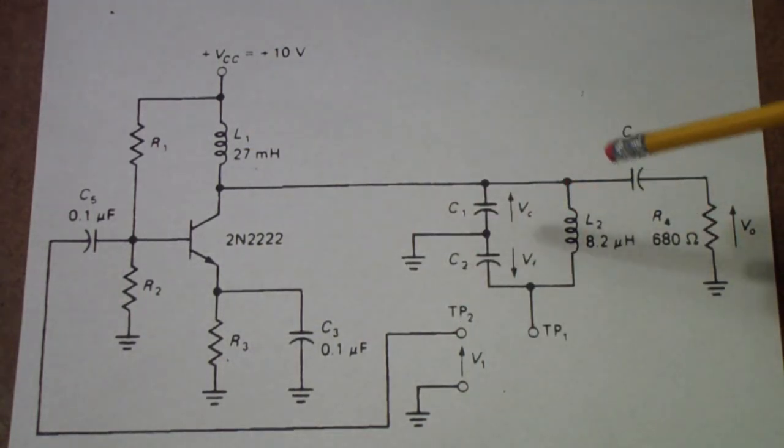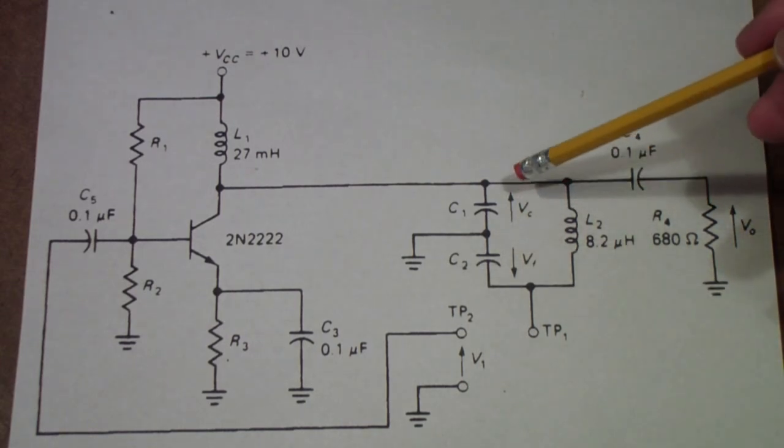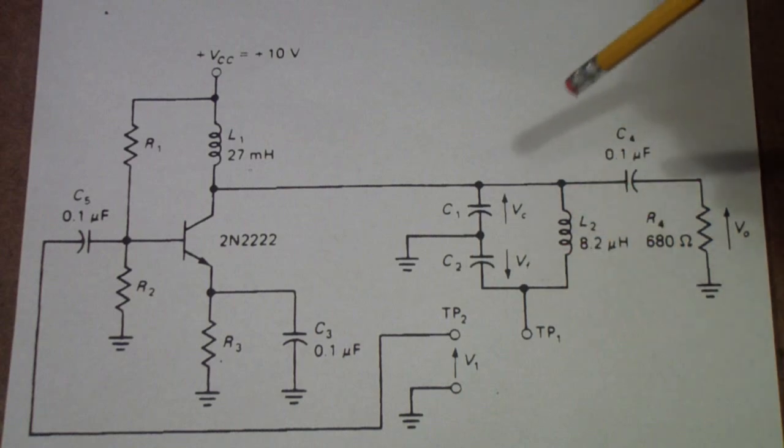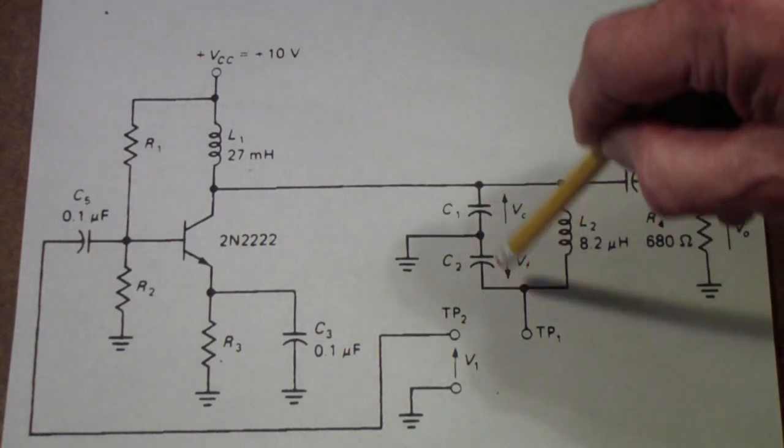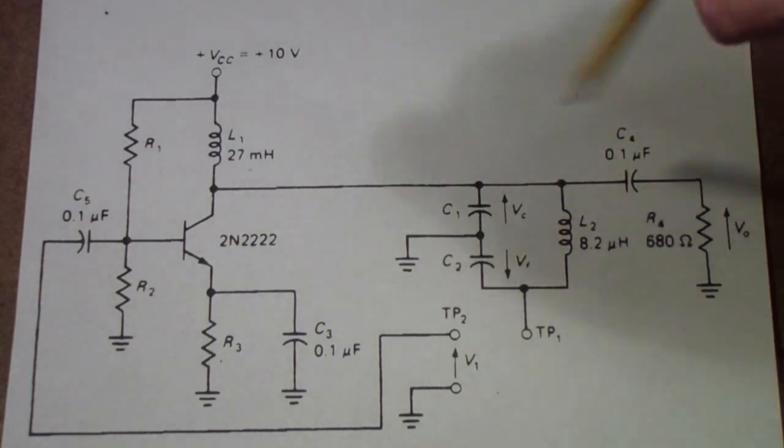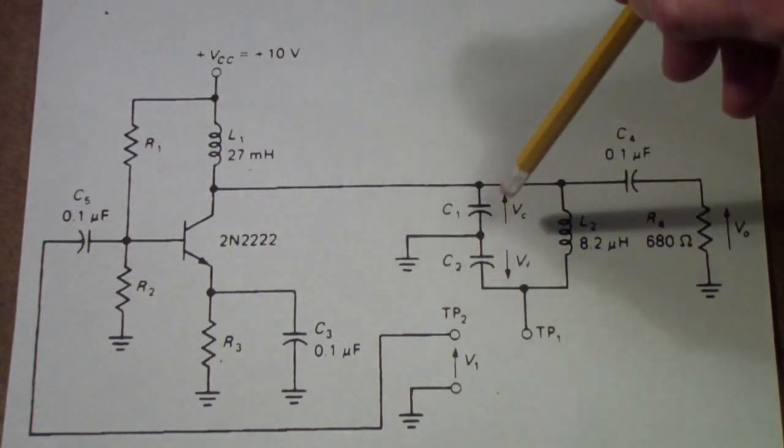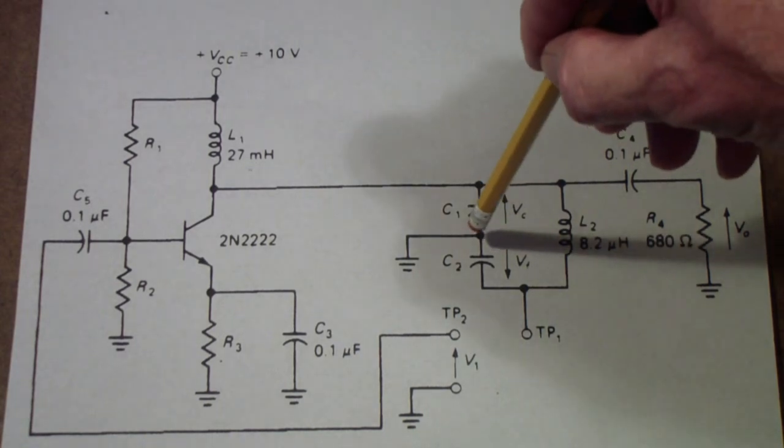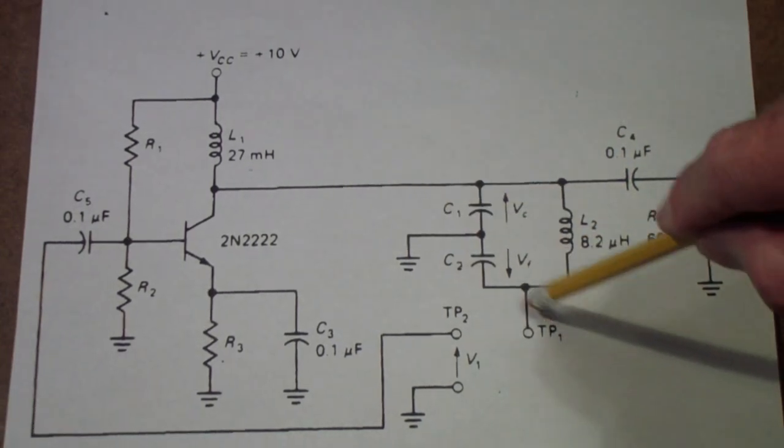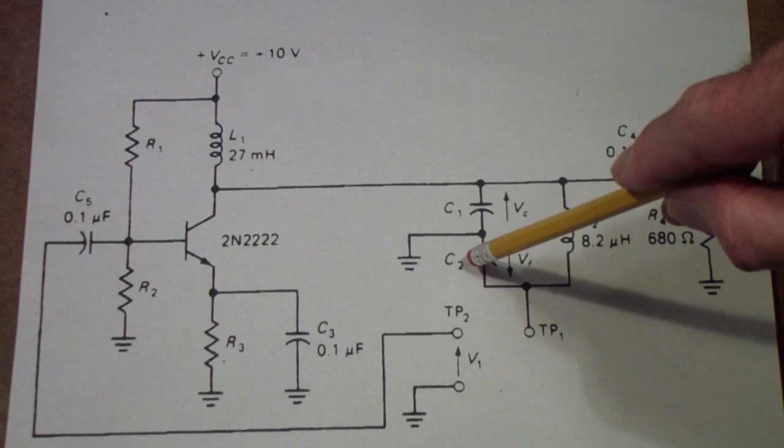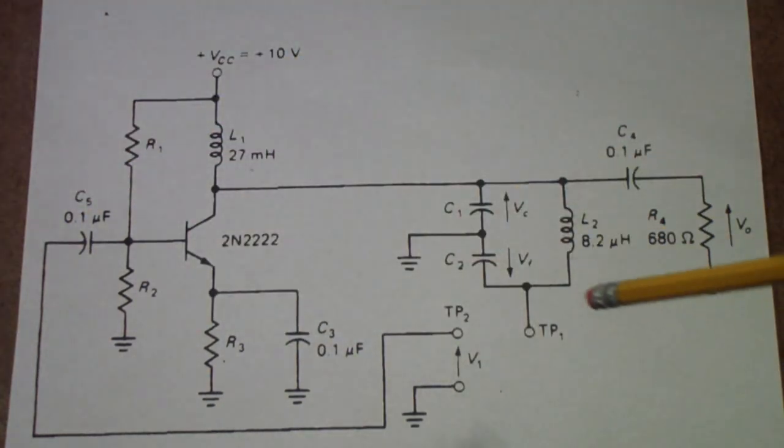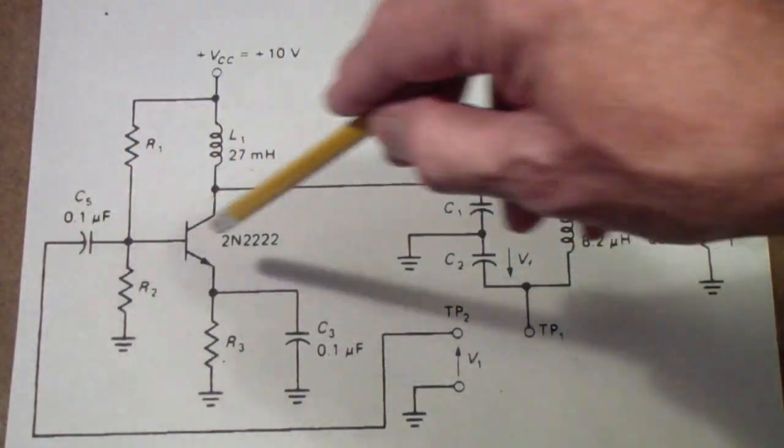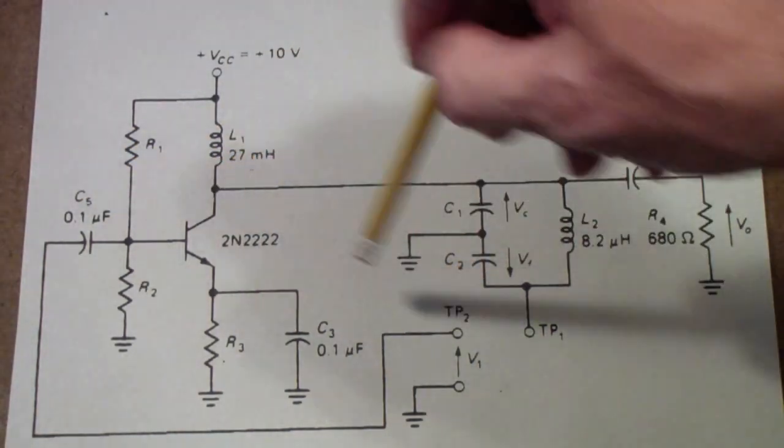As you will see in a moment, it works just like any other Colpitt's oscillator. That is, at a particular frequency, the resonant frequency of this network, there is a circulating resonant current that goes back and forth due to the feedback, and a portion of that, the portion from ground to this point, or the voltage across C2, is picked off to be fed back. But before we do that, let's actually look at the characteristics of this amplifier without feedback.